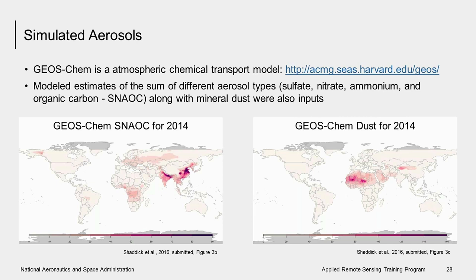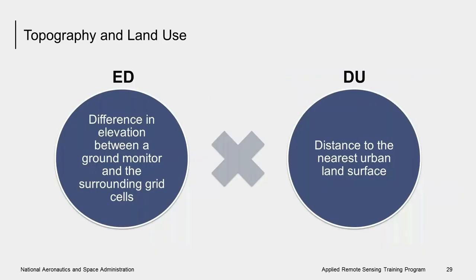In the Von Donkelaar study, topography and land use variables were found to be a significant predictor of PM2.5. Therefore, for each ground monitor, two quantities were calculated: one, the difference in elevation between the ground monitor elevation and that of the surrounding grid cell, or ED; and two, the distance to the nearest urban land surface, or DU. The resulting quantity, ED times DU, was calculated for each 0.1 by 0.1 degree grid cell for 2014.